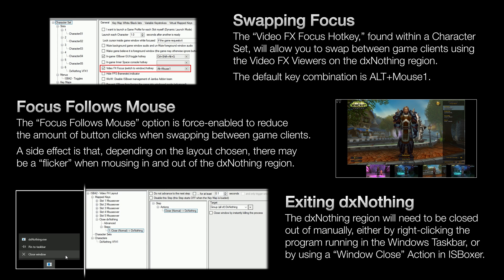Finally, after exiting out of your game clients, the DX Nothing window will continue to run in the background and you will need to shut it down manually, either by right-clicking on the program running in the Windows taskbar, or by creating a mapped key and using a Window Close action in IS Boxer.